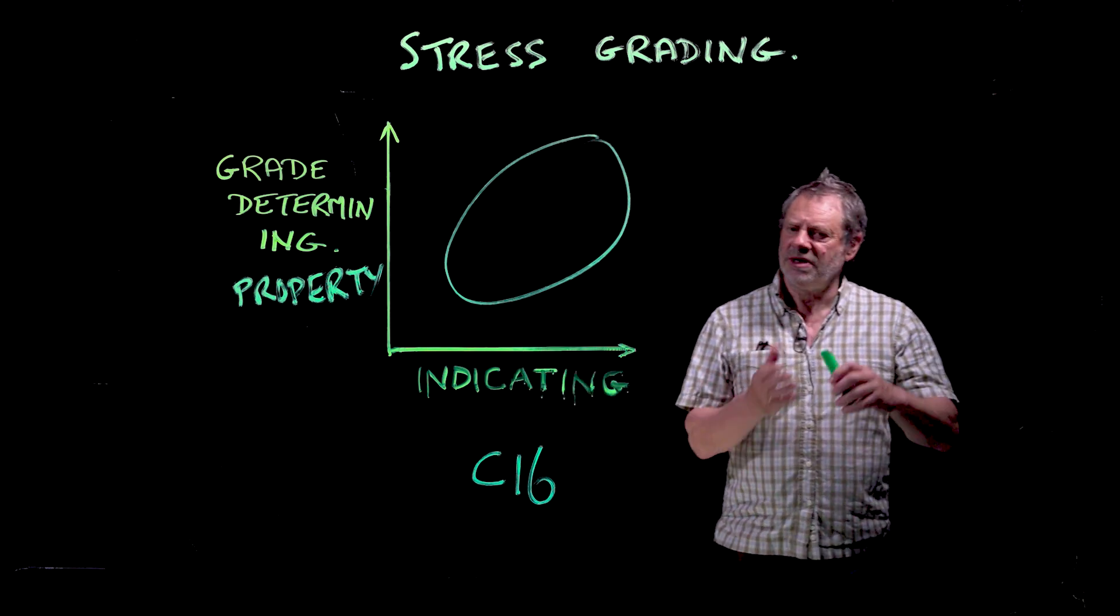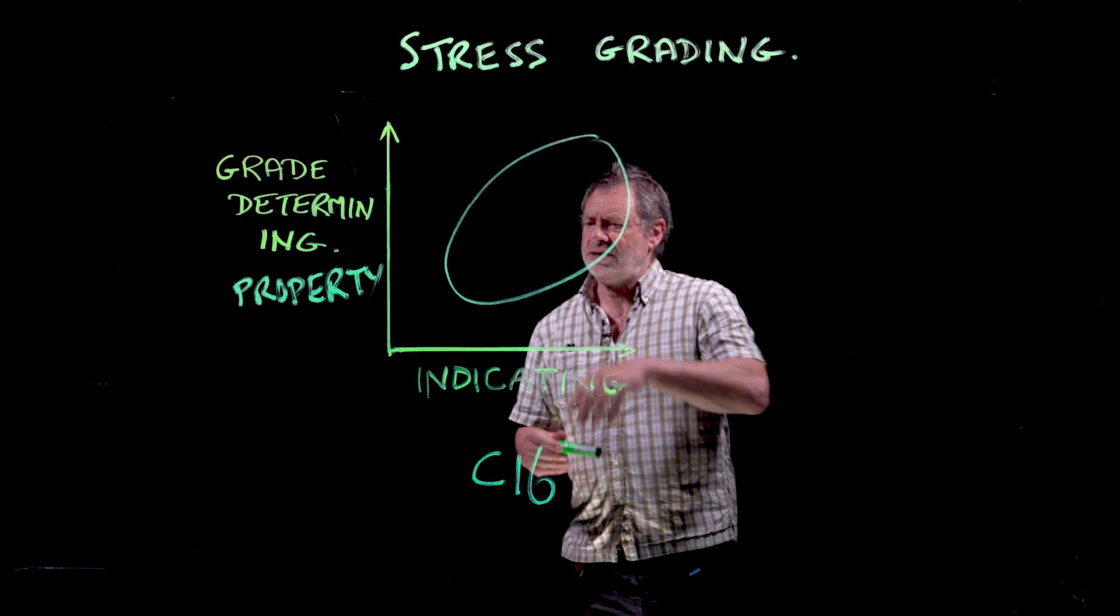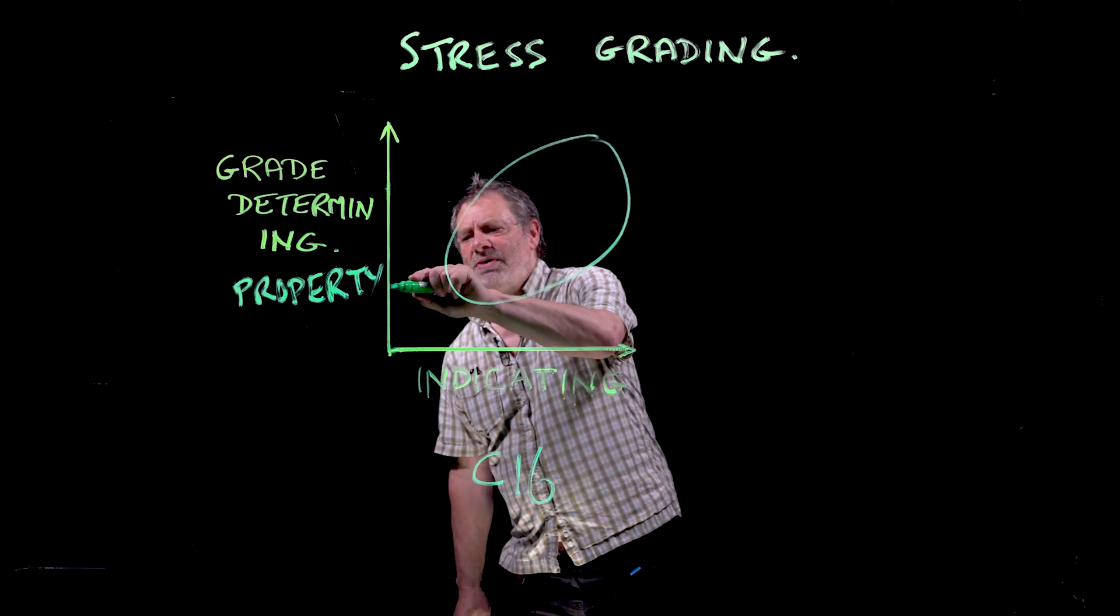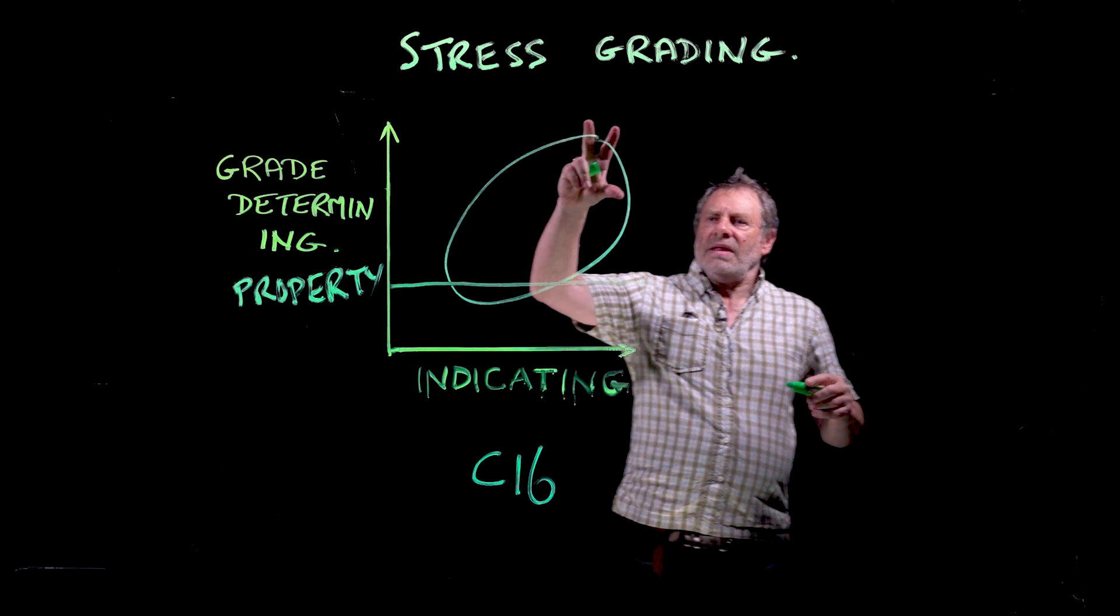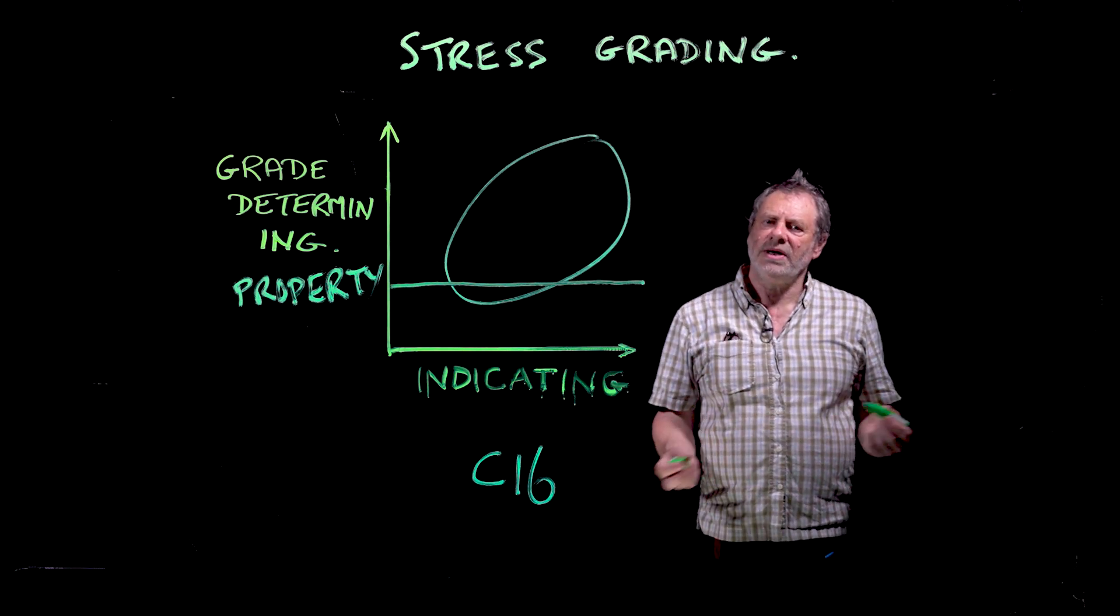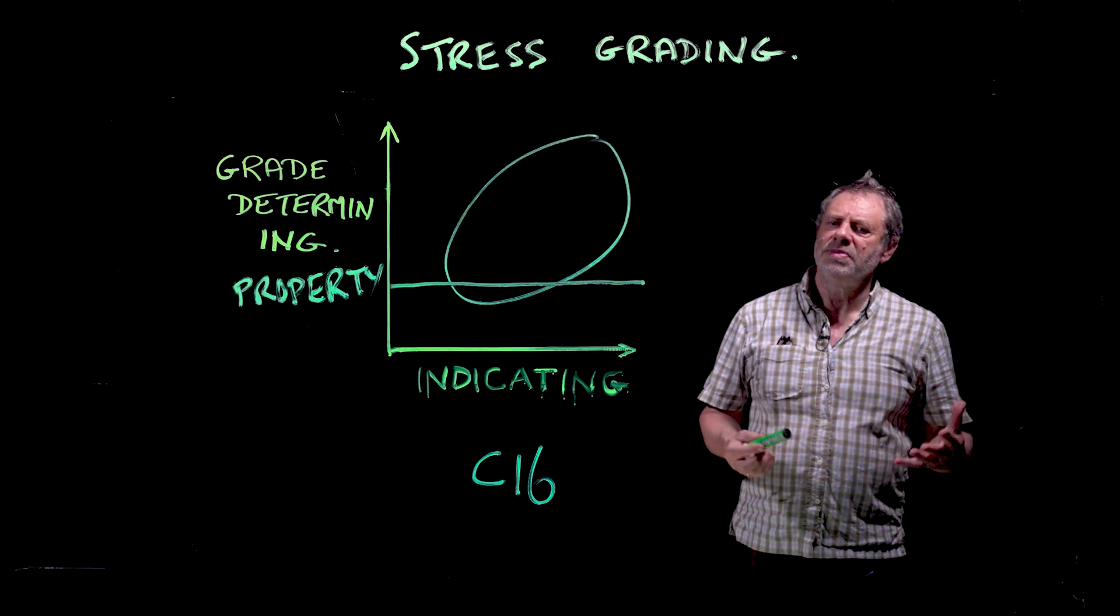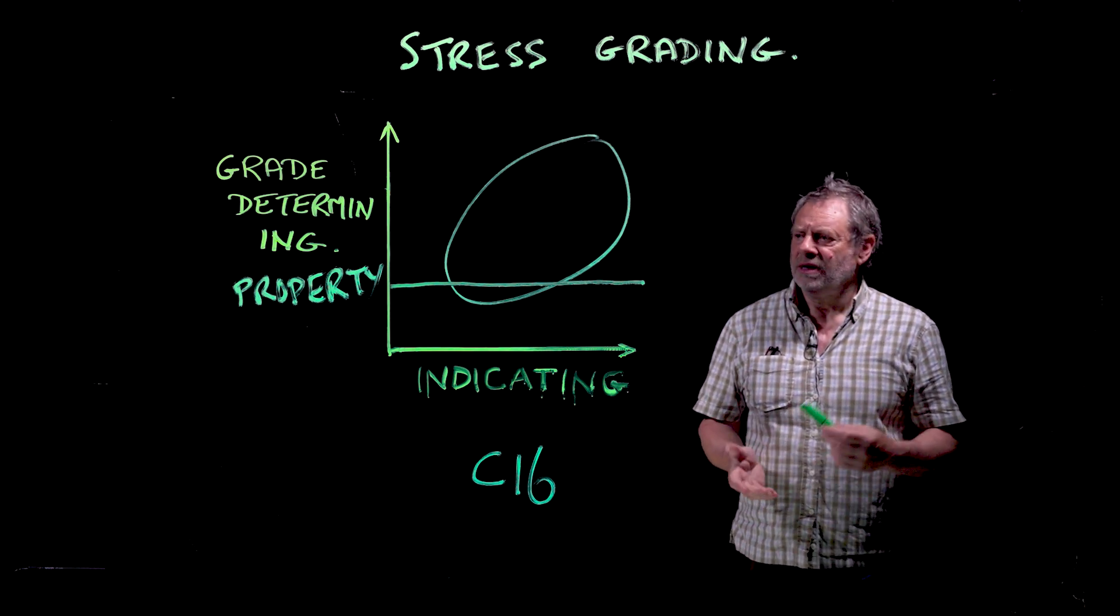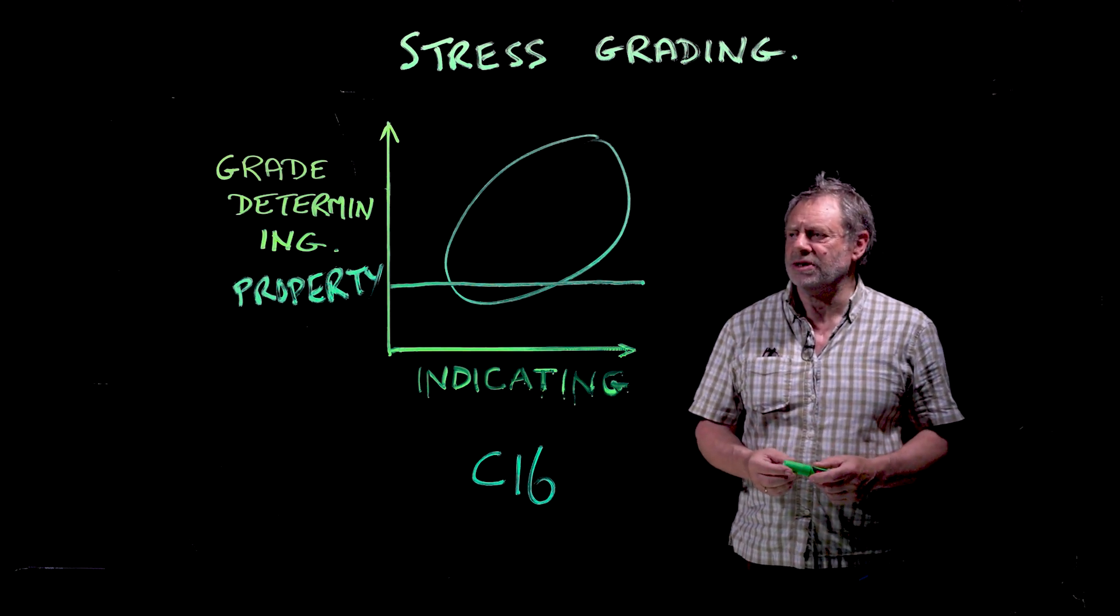When we do an indicating property, we have a grade determining property running across here. The population we're looking at isn't the theoretical population - it's an actual population of a large number of samples from a particular region of Europe. Standards committees decide how to divide these regions up.